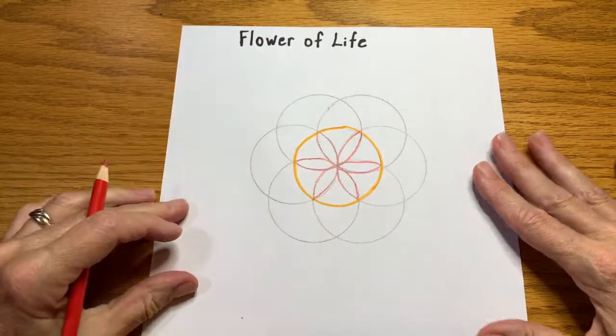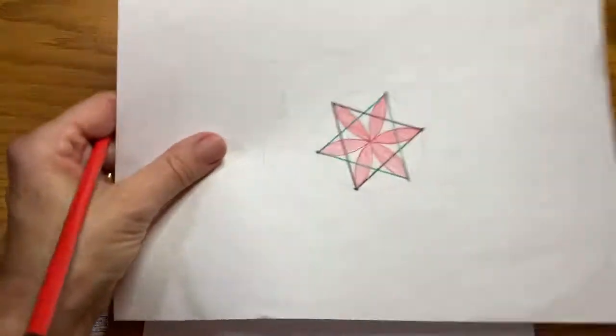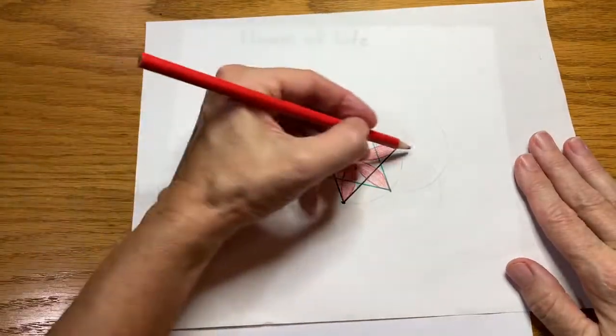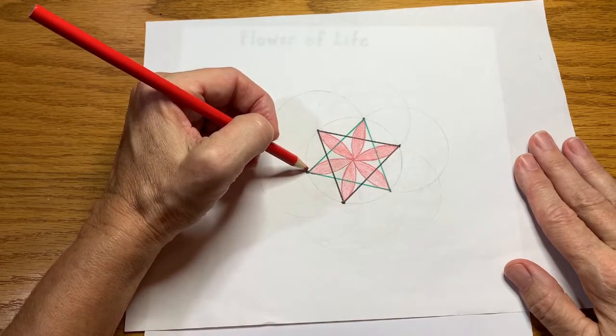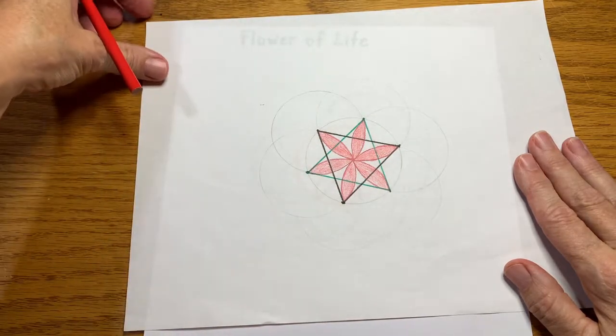Another cool thing with the Flowers of Life, and I've got another piece, you can create two equilateral triangles by connecting the points and then the two triangles create the Star of David.